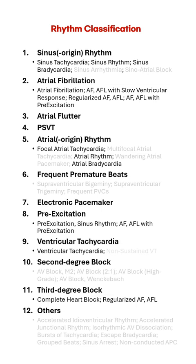Let's take a look at the rhythm classification feature of ECG Buddy. It can classify 11 basic rhythms. Additionally, by utilizing combinations of these rhythms and heart rate information, it can classify up to 19 detailed rhythms. The gray-marked detailed rhythms will be available after additional clinical trials, potentially allowing for up to 36 detailed rhythm classifications.